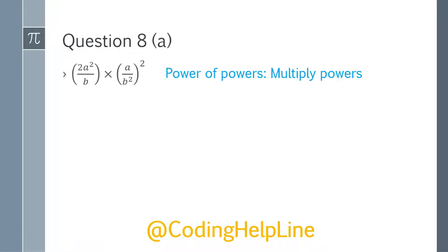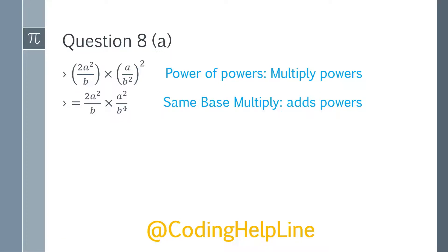Question 8a. We are given two terms that we have to multiply for simplification: parenthesis (2a² / b) multiplied by parenthesis (a / b²) close, squared. We will apply the first rule — power of power — and multiply the powers of the terms. So this will become (2a² / b) multiplied by (a² and b, 2 multiplied by 2 becomes 4).